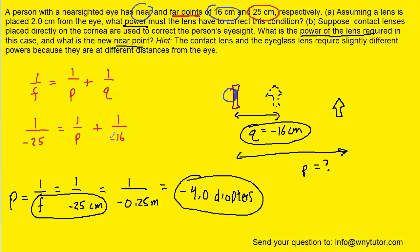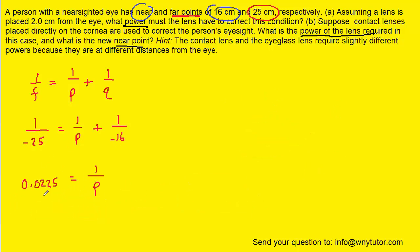We can plug into the thin lens equation again. We can add the 1/16th over to the left-hand side. We get 0.0225 on the left-hand side. We can flip the fraction upside down on the right side and flip this fraction around on the left side. On the right, we would be left with P over 1, which is just P. On the left, we have 1 over 0.0225, which turns out to be roughly 44 centimeters. This would be the nearest object distance at which the person could still see clearly, which is indeed the new near point.